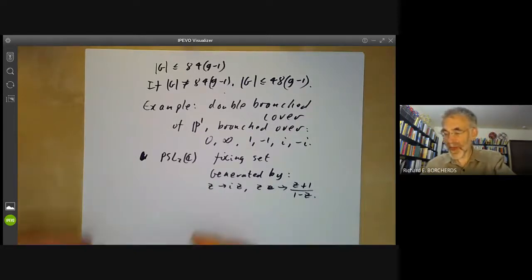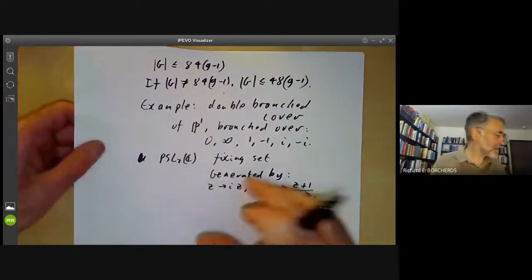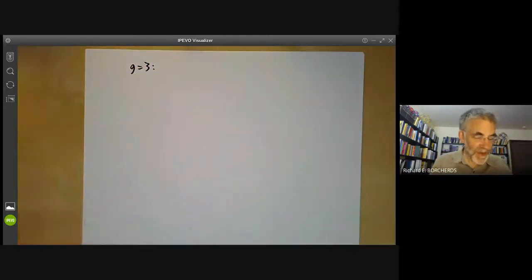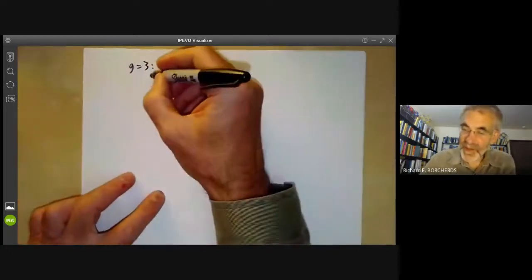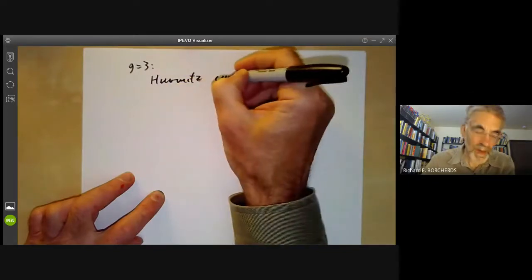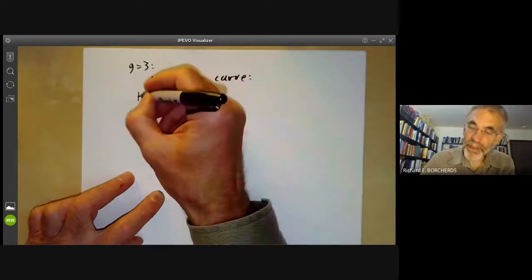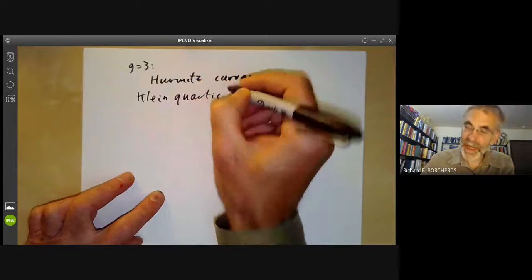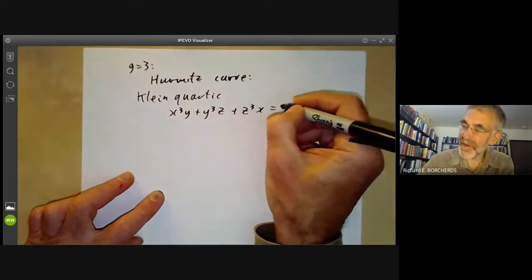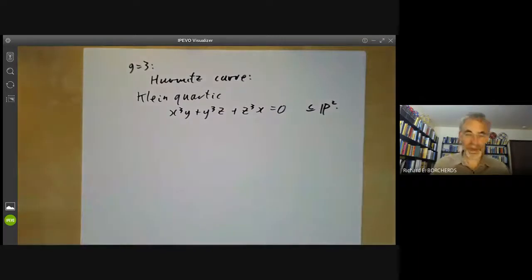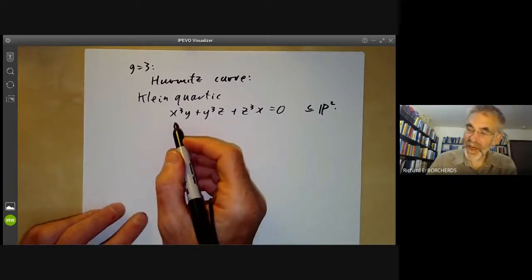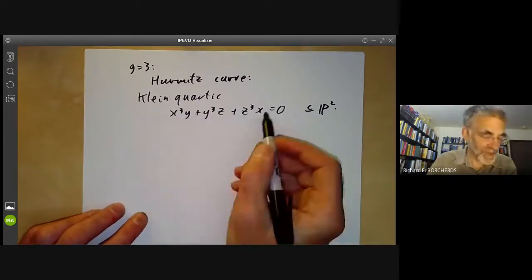So that's the most symmetric possible curve of genus two. What about genus three? In this case there is a Hurwitz curve, so this is the Hurwitz curve of smallest possible genus. This is given by the Klein quartic, and the Klein quartic is x cubed y plus y cubed z plus z cubed x equals naught. So this is a curve contained in the two-dimensional projective plane over complex numbers. It's easy to check this is non-singular, and the genus of a degree four non-singular curve is always three.